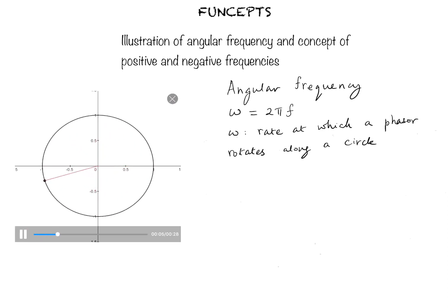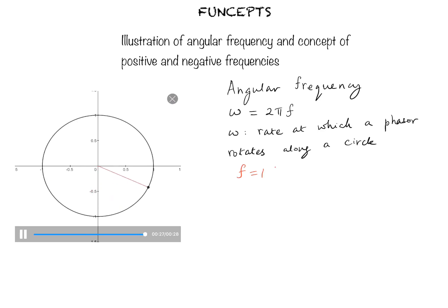A complete circle comprises 360 degrees or 2 pi radians. A frequency of 1 hertz means the phasor completing one full circle in one second. That means one full circle corresponds to 360 degrees or 2 pi radians. So f equals 1 hertz will therefore correspond to the angular frequency omega being 2 pi radians per second — that means the phasor has rotated by an angle of 2 pi radians in one second.